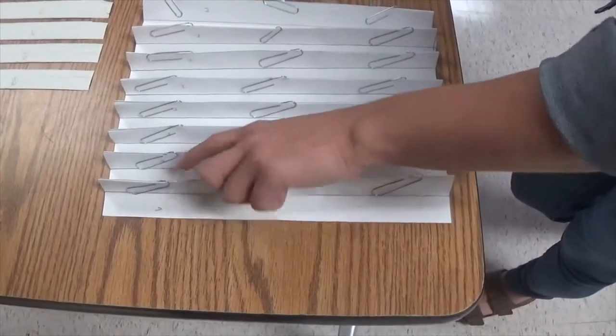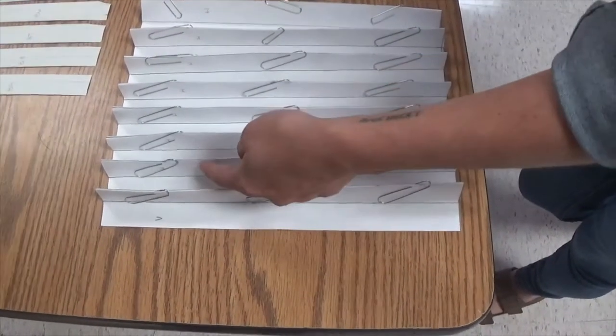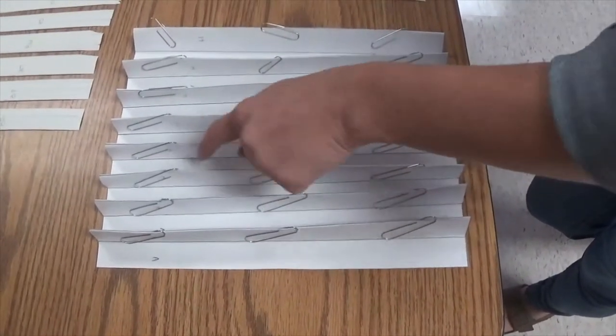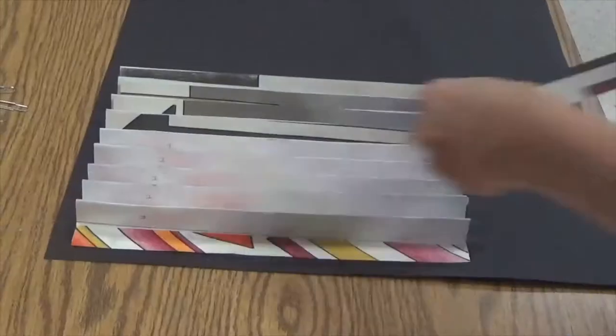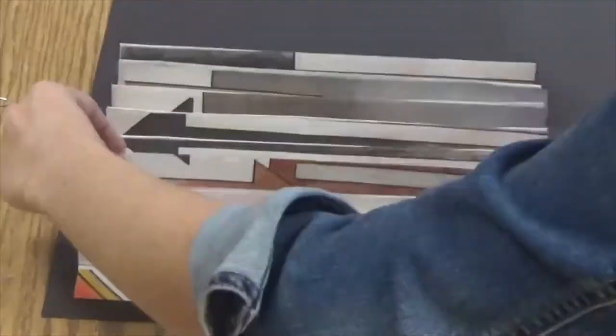When you have secured your folded base paper to the backer paper, you can now start placing your cut strips accordingly. You will start with A and begin laying your strips down in place and secure them with glue. Remember to take your time.